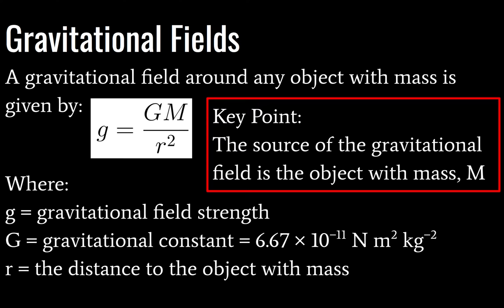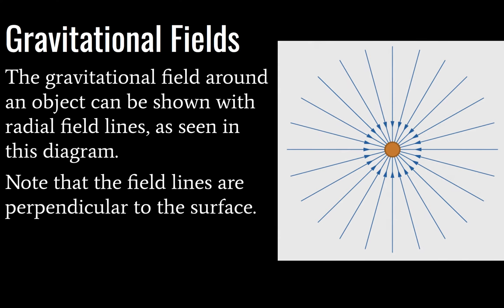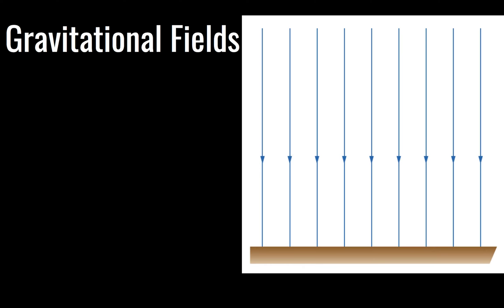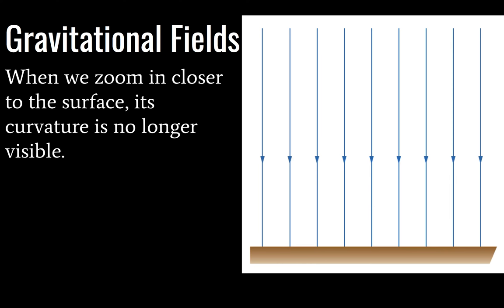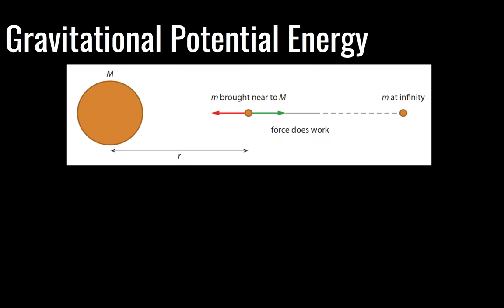Just a key point here: the source of our gravitational field is going to be our object with mass, given by the large M. This diagram here shows field lines around an object with mass and we have a radial pattern. You should note that the field lines are perpendicular to the round surface. And if we zoom in to that surface, we can't see the curvature anymore, but the field lines are still perpendicular.